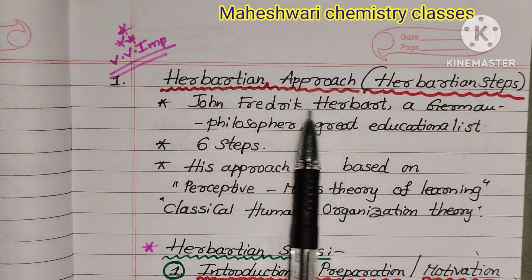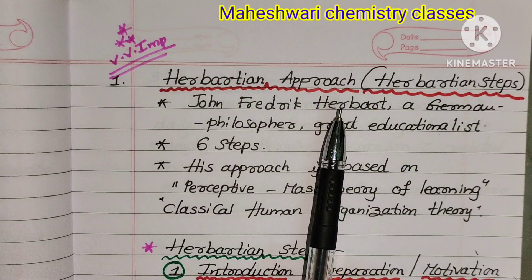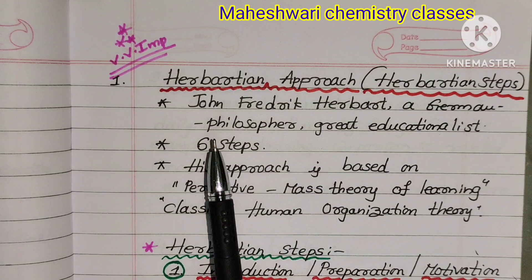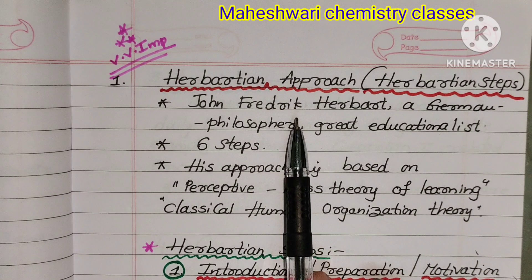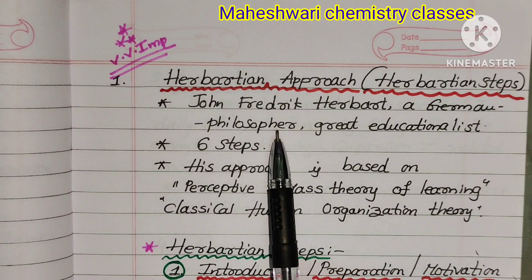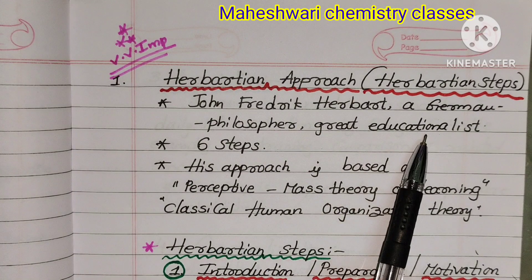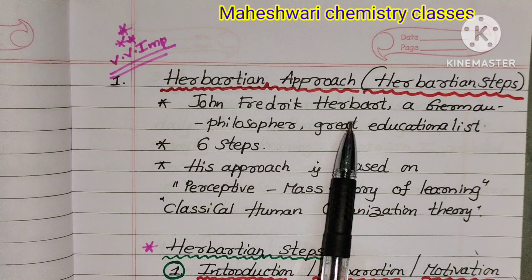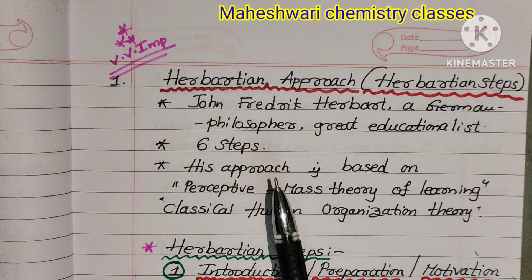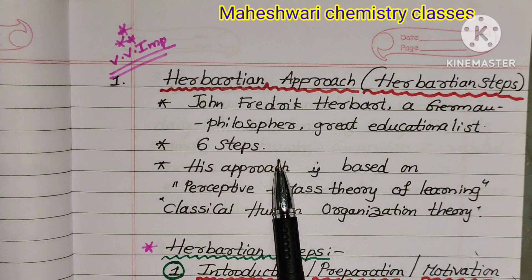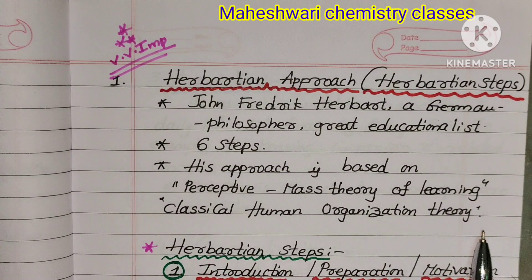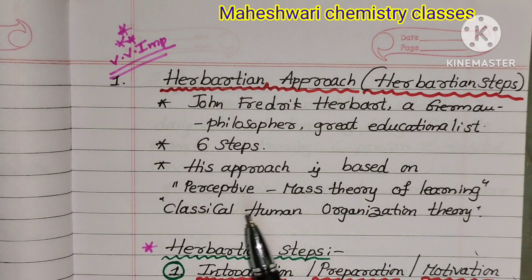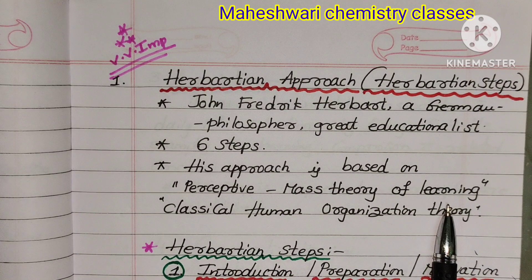First one: Herbartian approach, also called Herbartian steps. The Herbartian approach is named after John Frederick Herbart, a German philosopher and great educationist. The Herbartian approach is based on the Apperceptive Mass Theory of learning.